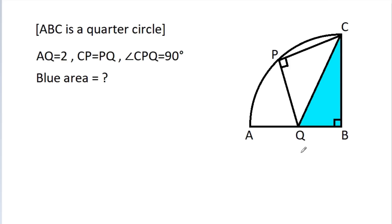In this video, we have given a quarter circle and AQ is 2, CP is equal to PQ, and angle CPQ is 90 degrees. We have to find the blue area.